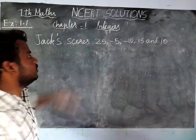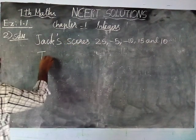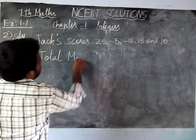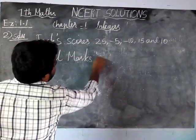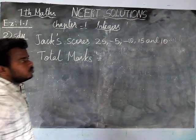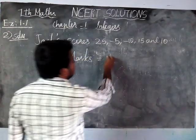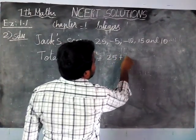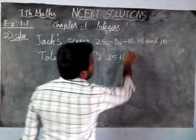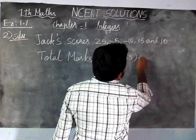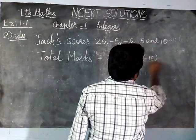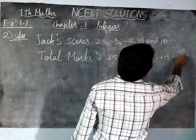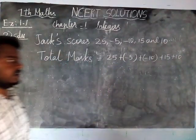What is the total marks? We have to add all the numbers: 25, plus minus 5, plus minus 10, plus 15, plus 10. These are the 5 rounds marks written here.